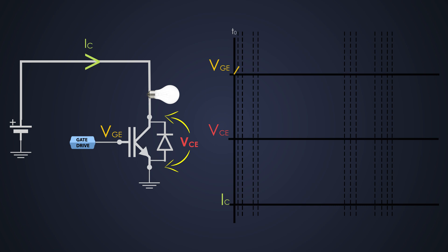This voltage increases and charges the input capacitor of the IGBT with the internal resistance of the driver circuit. When the threshold voltage of the VGE is reached, the IGBT starts conducting and its collector current increases. We will call this time T1 when it reaches 10% of its maximum value. The gate-to-emitter voltage reaches its maximum value, the collector current increases, and collector-emitter voltage decreases. At time T2, the collector-to-emitter voltage VCE reaches nearly zero and the collector current reaches 90% of its value. At time T3, we can say that the IGBT is fully turned on.